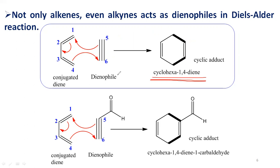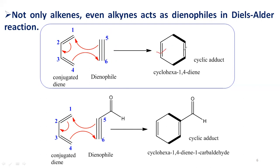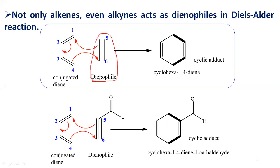In the Diels-Alder reaction, if we use alkenes as dienophiles we get a cyclohexene derivative with one double bond in the ring. But if we use alkynes as the dienophile, we observe two double bonds in the ring — because only one pi electron set of the alkyne is involved in the reaction, so the other pi electrons remain, giving cyclohexadiene as the cyclic addition product.